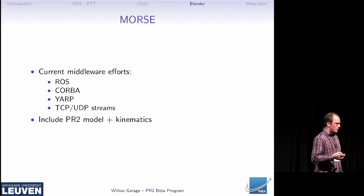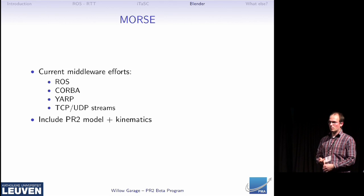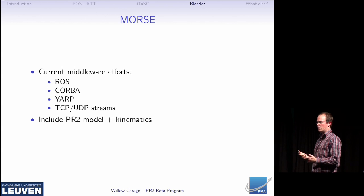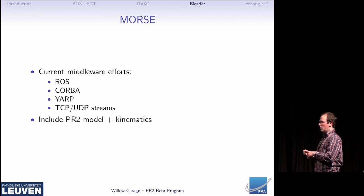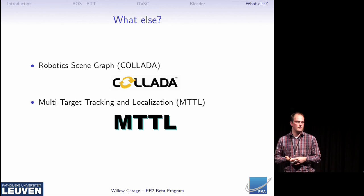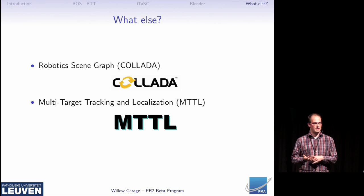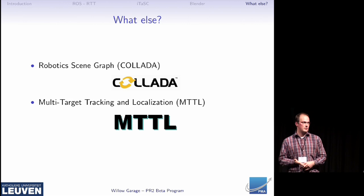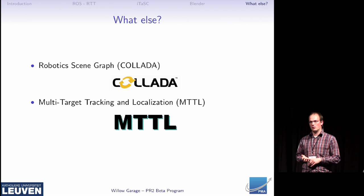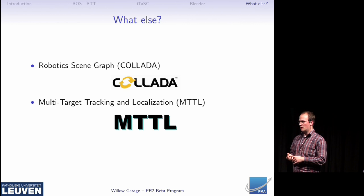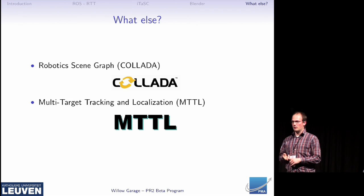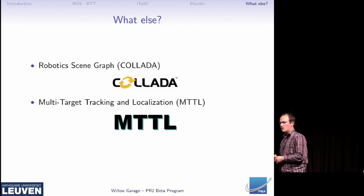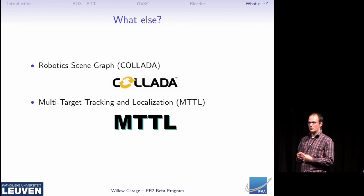What did we actually do already with Blender? We interfaced it to Korba, ROS, YARP, and regular TCP/UDP streams. We have a PR2 model in there and are currently implementing the kinematics for it. Because we're using Blender and it's easy to draw models, we're going to try to improve the Collada support for ROS, meaning conversion to URDF, conversion to KDL, and so on. We will also be implementing a multi-target tracking and localization algorithm.